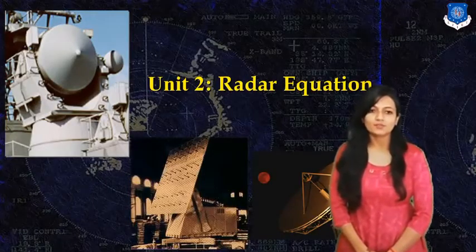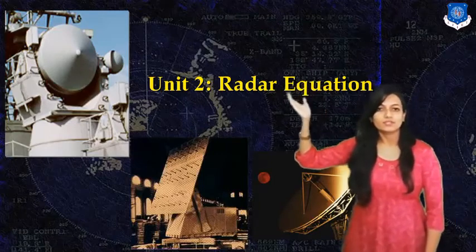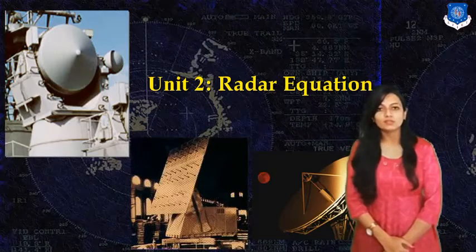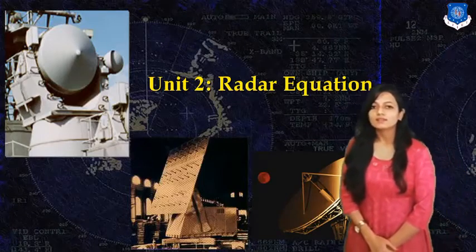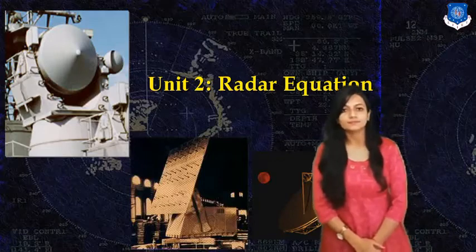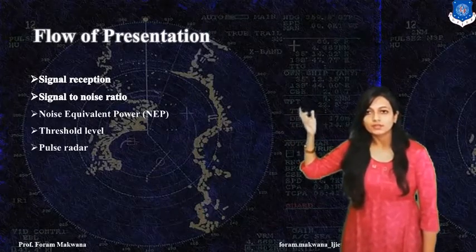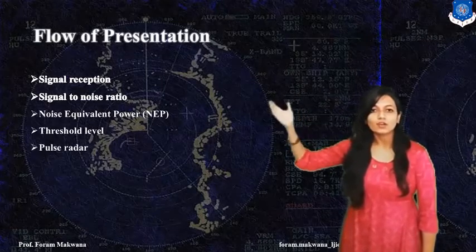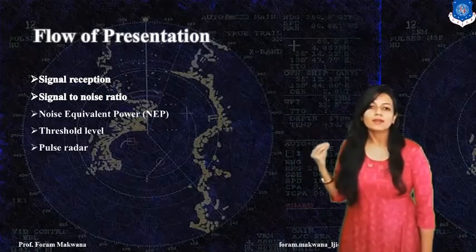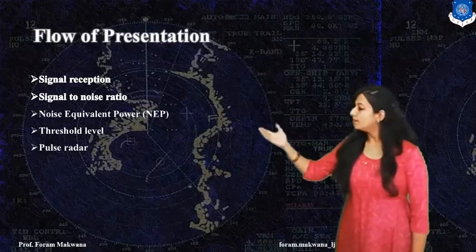In the previous session we started with number 2, that is the RADAR Equation. We saw the relationship between pulse repetition time, pulse frequency, duty cycle, and its rise time with average power and peak power. In today's session we are going to study how a signal is received based on the signal-to-noise ratio, what is noise power, what should be the threshold level to detect any target, and lastly we will study the pulse data.